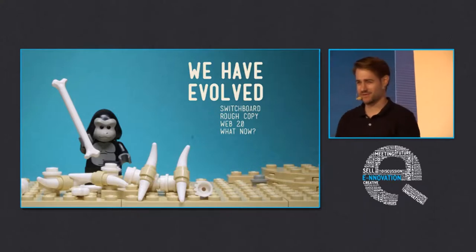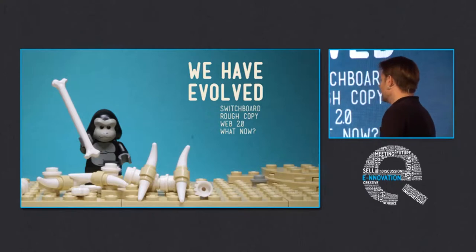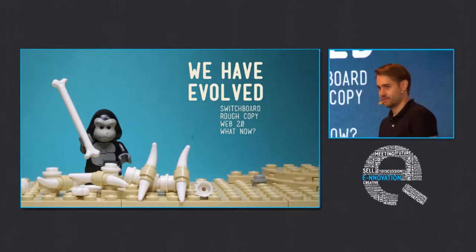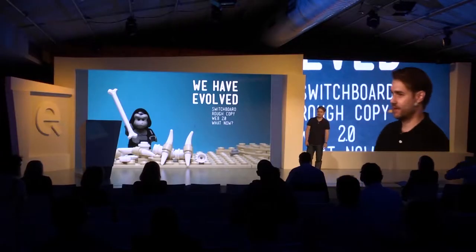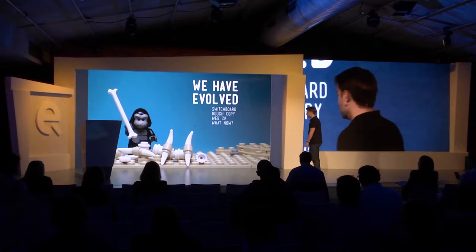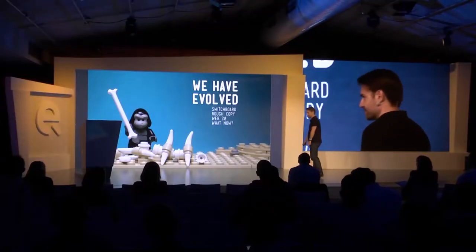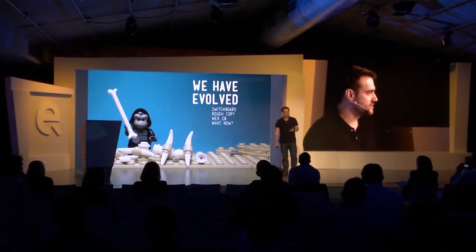I want to talk briefly about how the web has evolved — a quick two-minute history lesson — because I don't think we can talk about where we are now without looking back at how we got here. The web started as a giant buzzing communications switchboard: Usenet groups, email, one person communicating to many or to another person, message boards, bulletin boards — that type of thing.